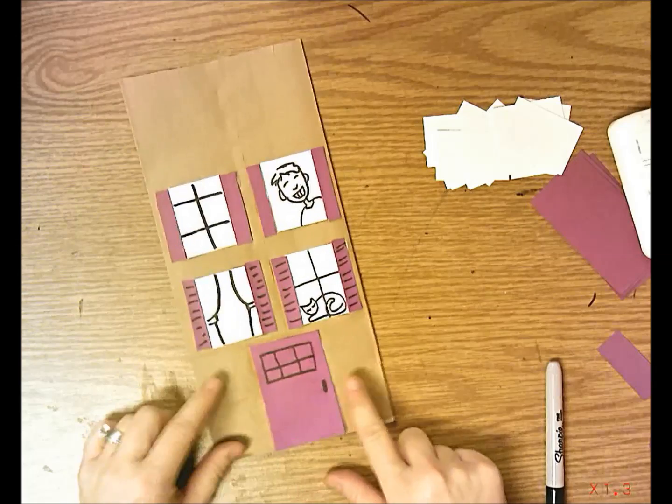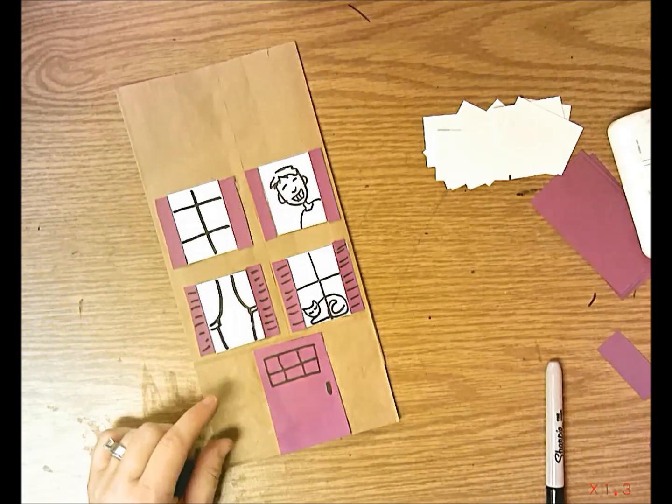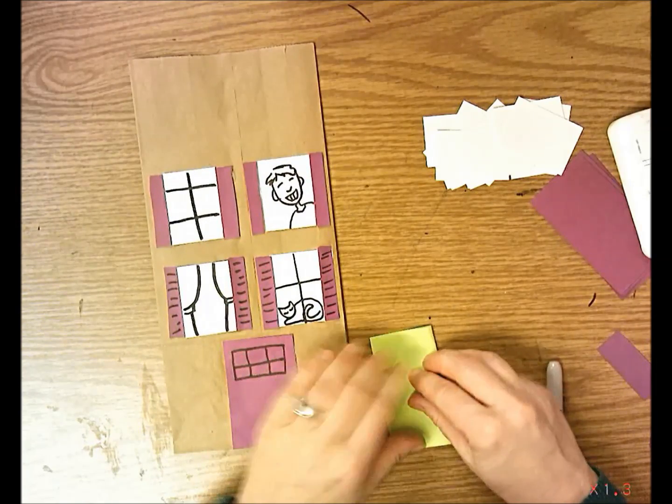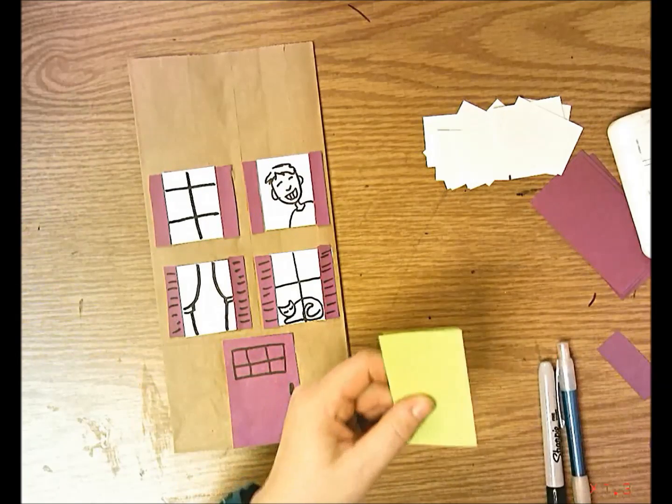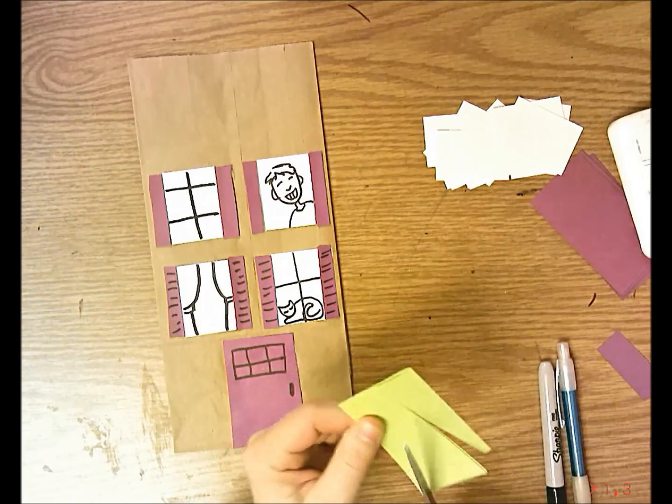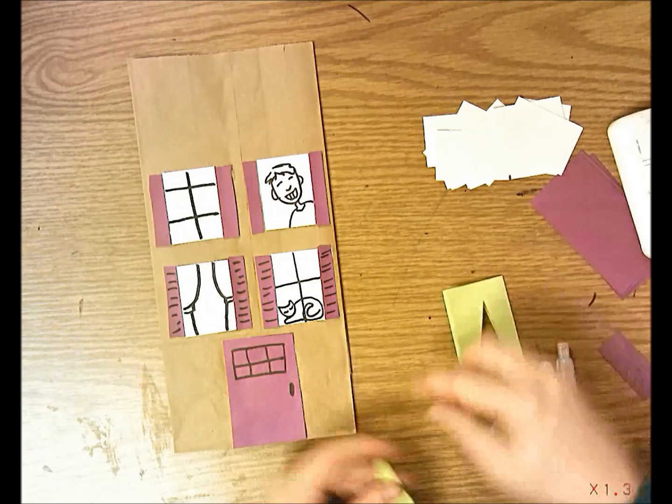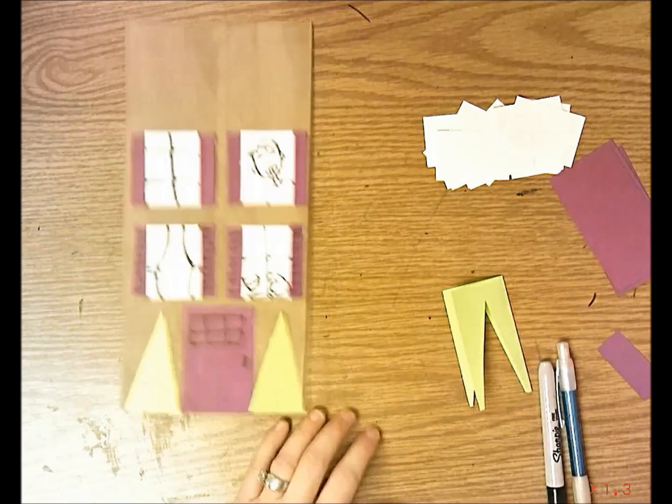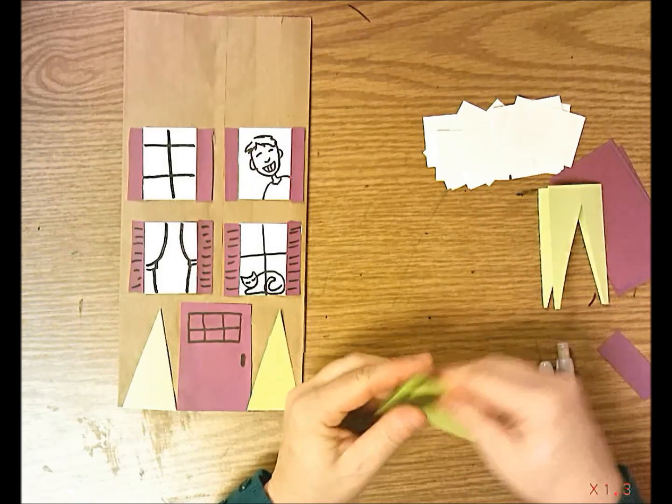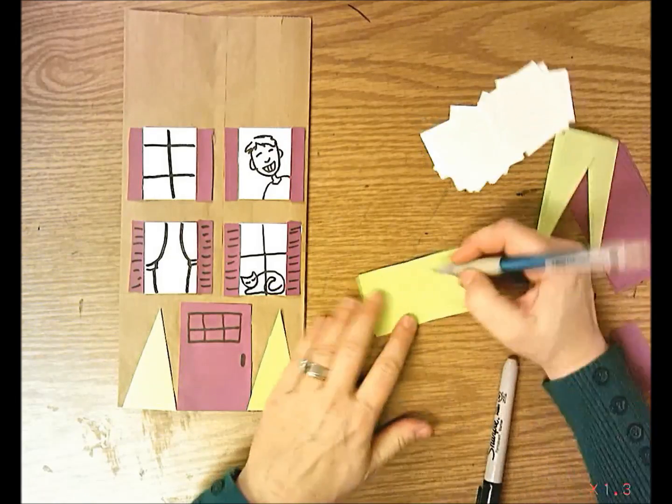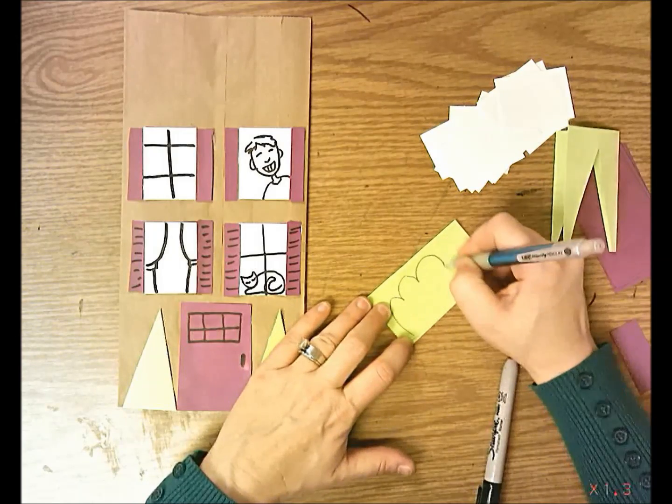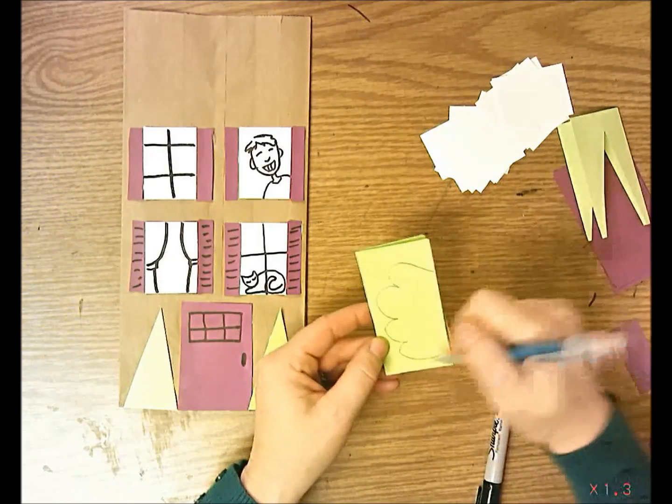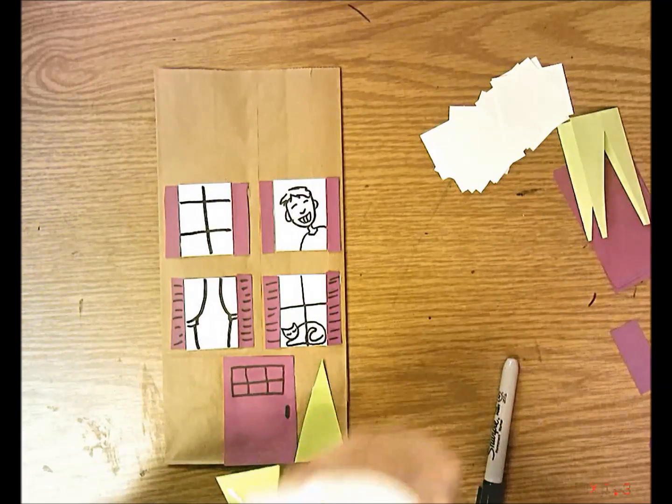Now you could put window boxes or flowers down here. I think I'm going to do two little trees and fold my green paper in half. I'm just going to cut out a triangle for an evergreen tree and glue those down. You could do a bumpy line or a circle. You could fold your paper in half if you wanted to do two bushes, draw a bumpy line, and cut these out.